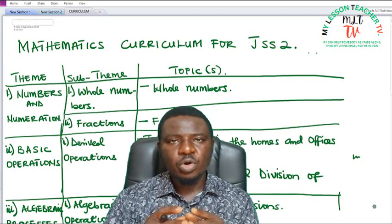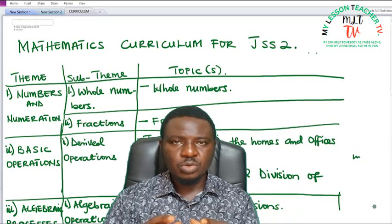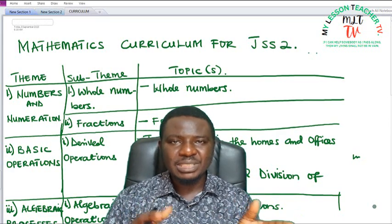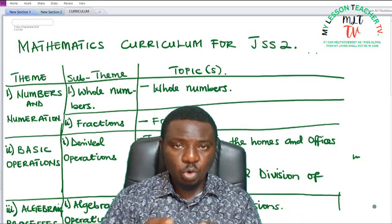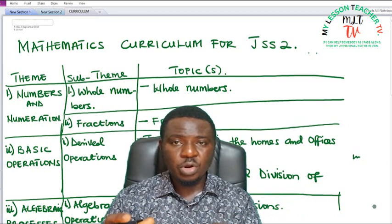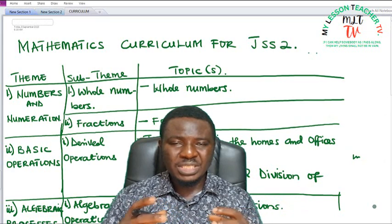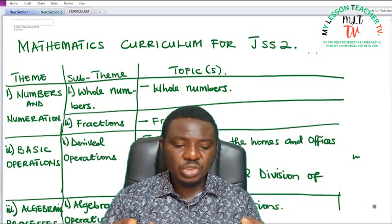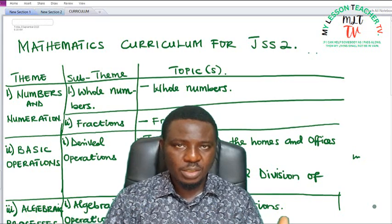We have looked at the curriculum for mathematics in GSS1 and it is not much different from that of GSS2. They both have the same themes and sub-themes and similar topics. The GSS2 curriculum is a continuation of our GSS1 curriculum. Most of the topics you see in GSS2 are continuations of what you have been taught in GSS1.